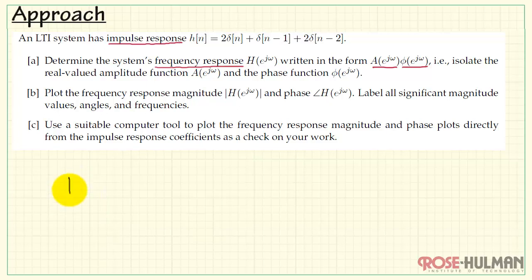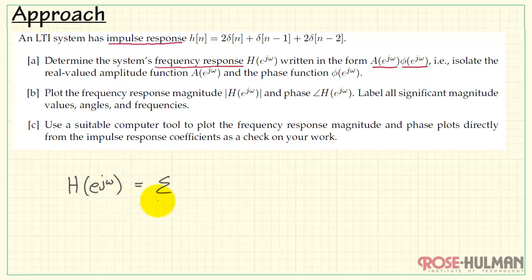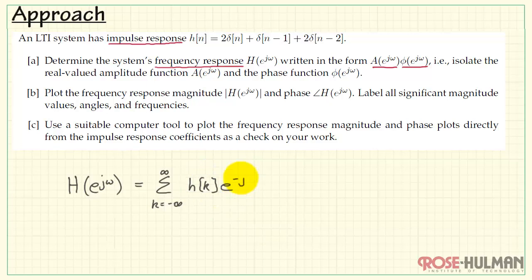Let's talk about the overall approach to part A. In general, frequency response can be determined from the impulse response as the infinite summation of the impulse response values, indexed by k, times e to the minus j omega k.